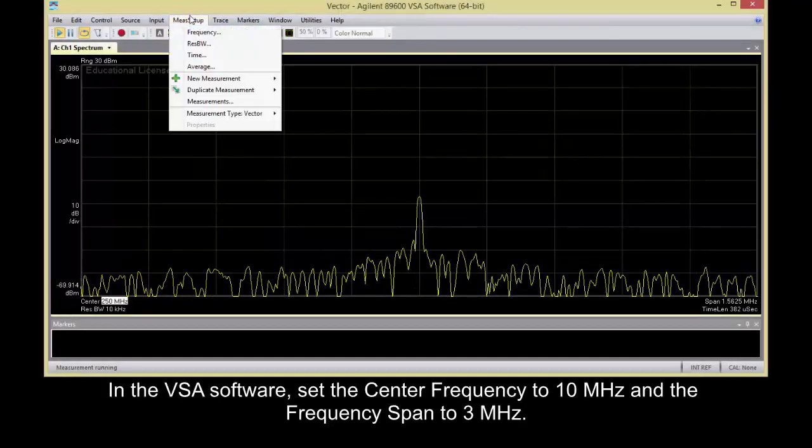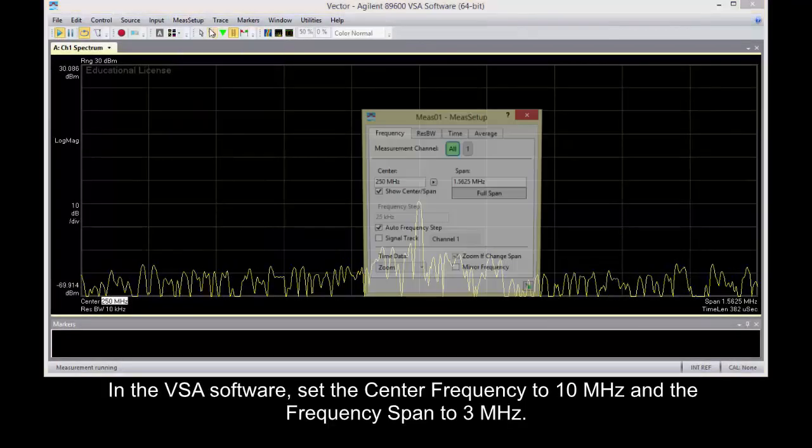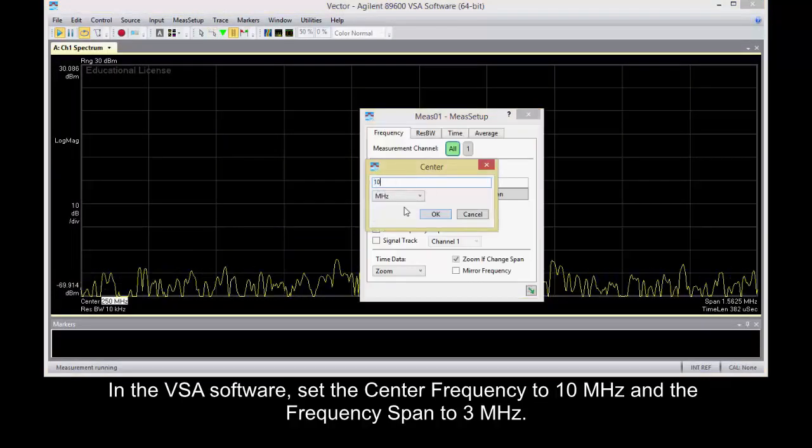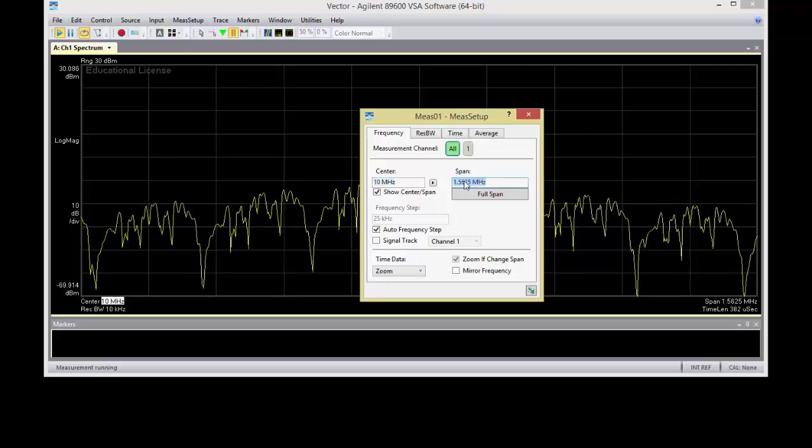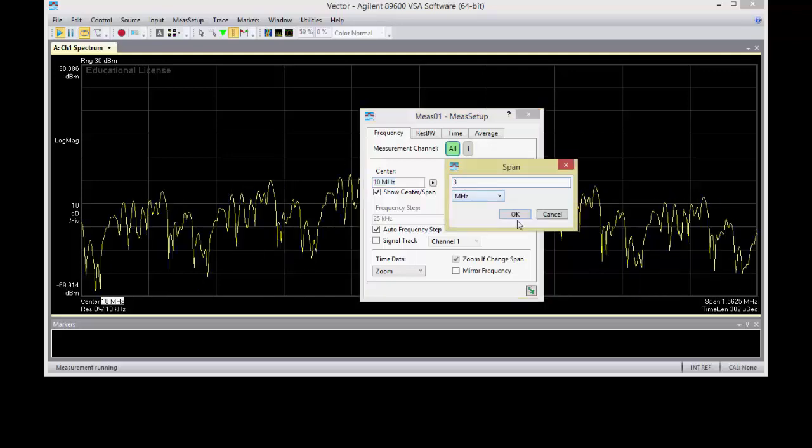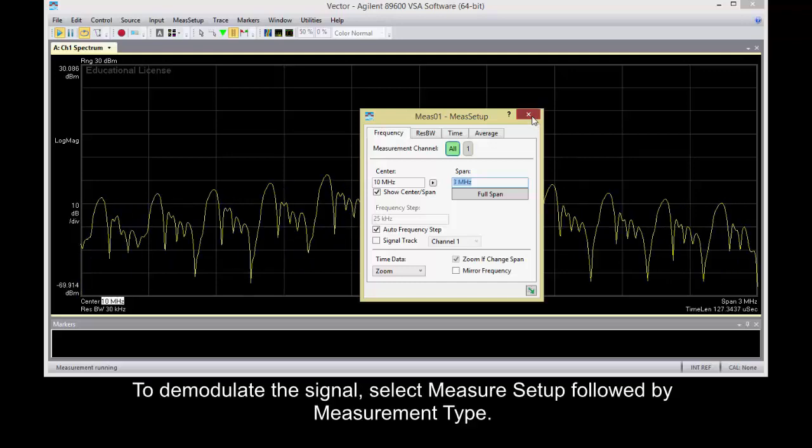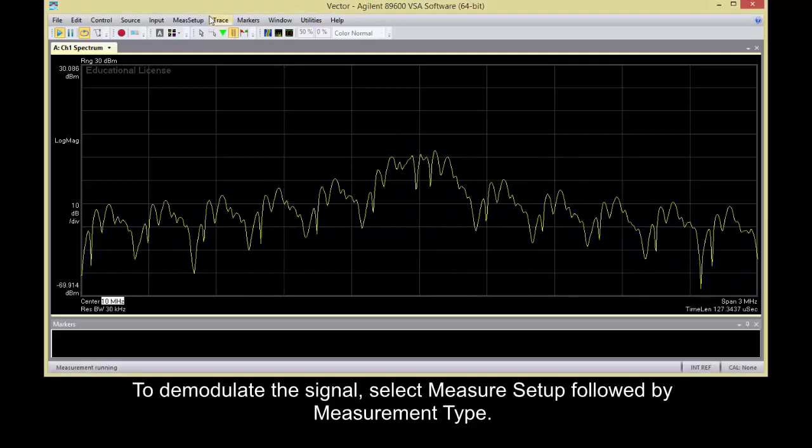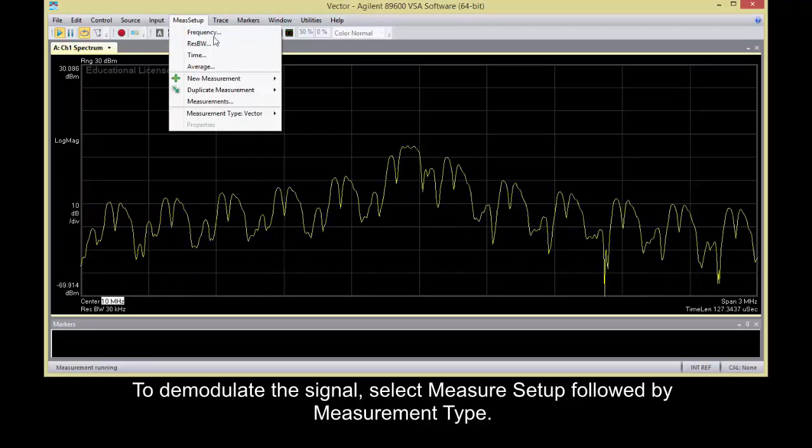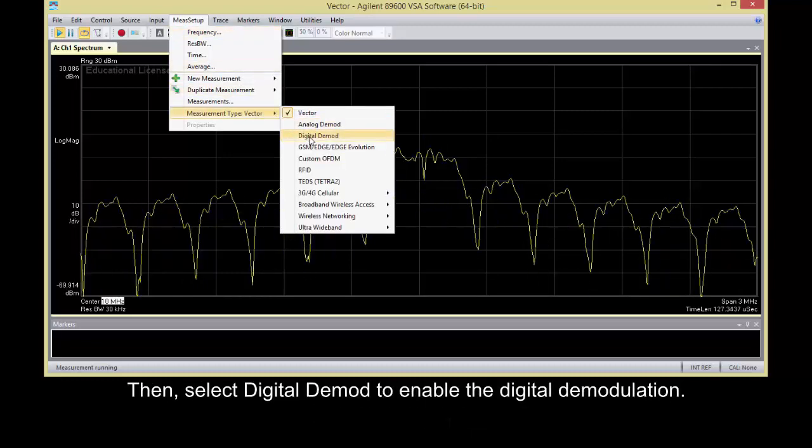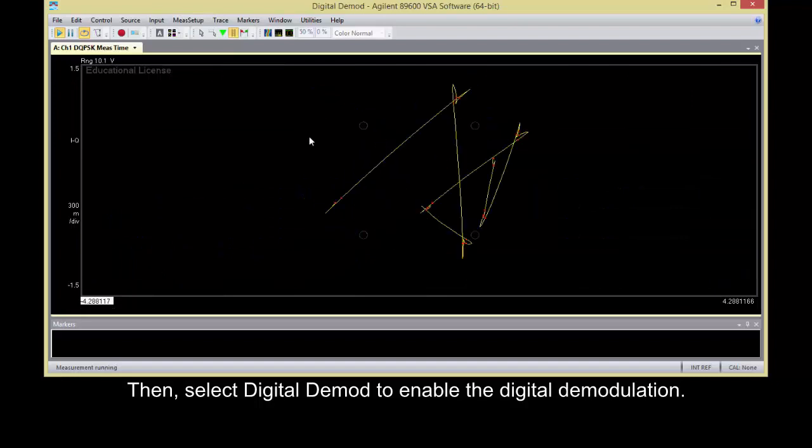In the VSA software, set the center frequency to 10 MHz and the frequency span to 3 MHz. To demodulate the signal, select Measure Setup followed by Measurement Type. Then select Digital Demod to enable the digital demodulation.